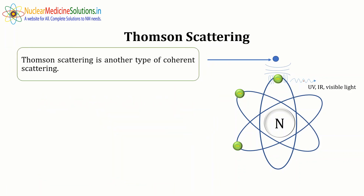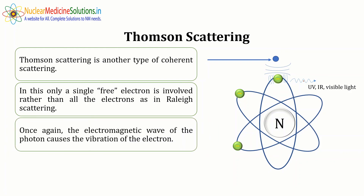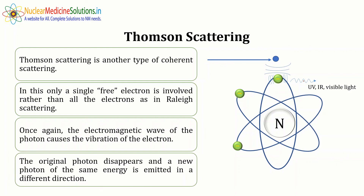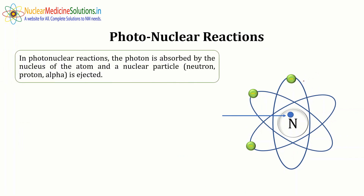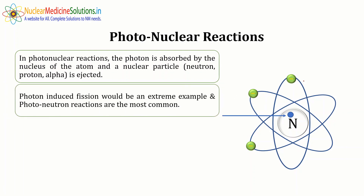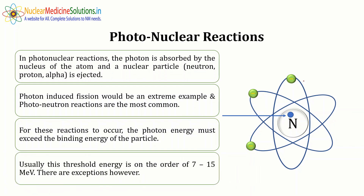In Thomson scattering, the mechanism is the same as Rayleigh scattering, except only a single free electron is involved rather than all electrons in the atom. It is also a coherent scattering process; the original photon disappears and a new photon of the same energy is emitted in a different direction. In photonuclear reactions, the photon is absorbed by the nucleus and a nuclear particle — neutron, proton, or alpha — may be ejected. The extreme example is photon-induced fission; a common example is photoneutron reactions. For these reactions, photon energy must exceed the binding energy of the particle, typically 7 to 15 MeV.